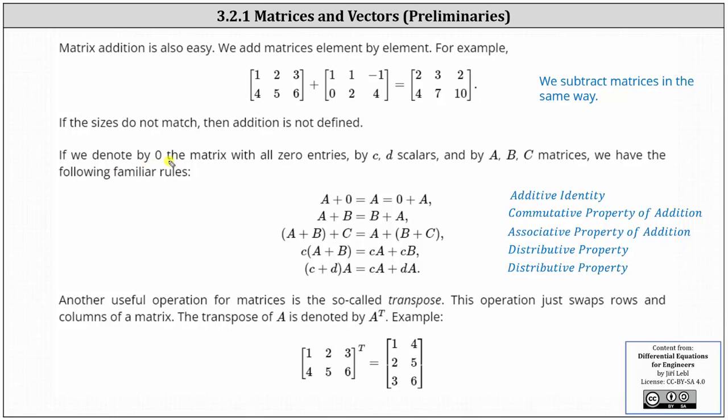If we denote by zero the matrix with all zero entries, where c and d are scalars and A, B, and C are matrices, we have the following familiar properties which will remind us of the properties of real numbers. First, we have A plus zero equals A, which is equal to zero plus A. This should remind us of the additive identity property. Next, we have A plus B equals B plus A, which should remind us of the commutative property of addition.